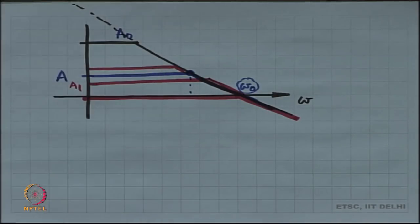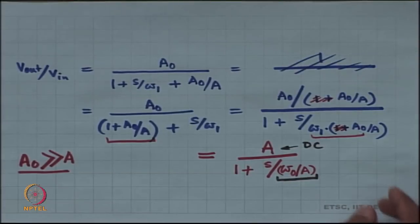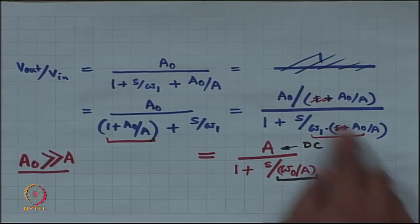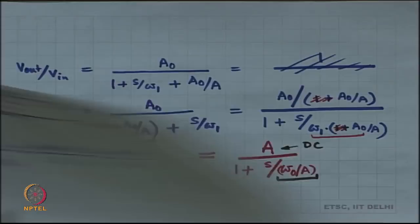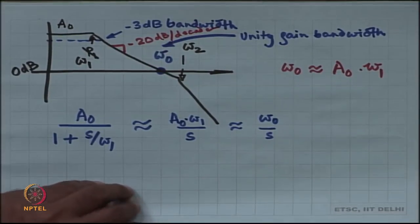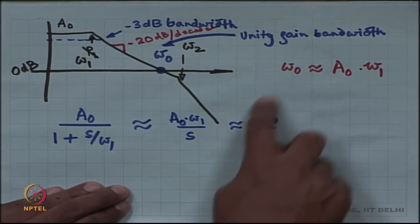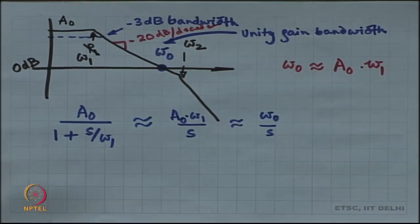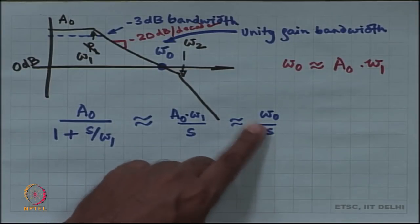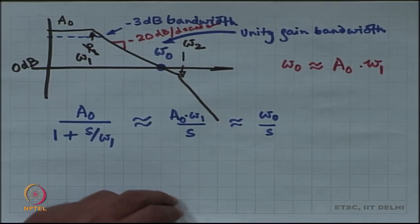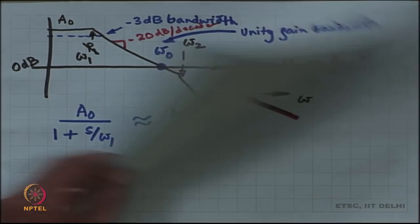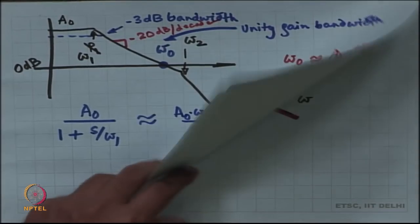In our analysis we ignored the '1 plus' term. As soon as you ignore it, you can call the op-amp as omega naught by S. So when you have a lot of op-amps in the system, you can approximate all the op-amps as omega naught by S, and that will give you a quicker answer to the problem.